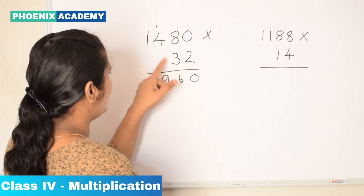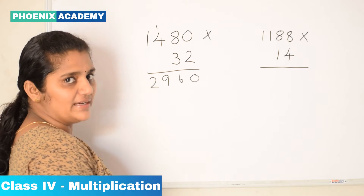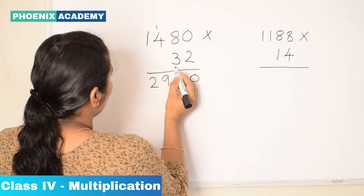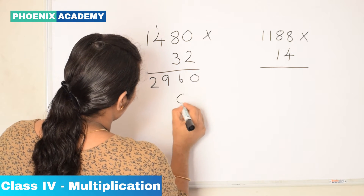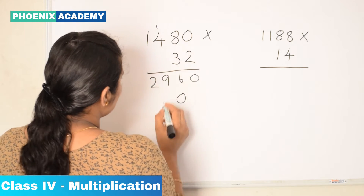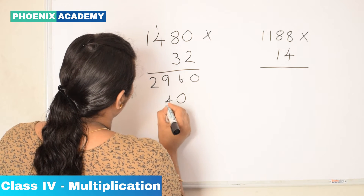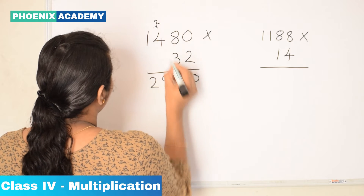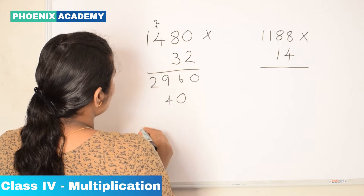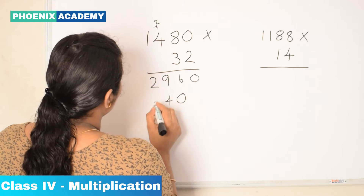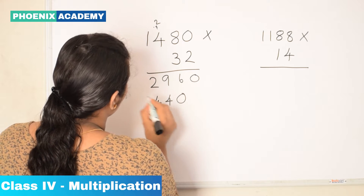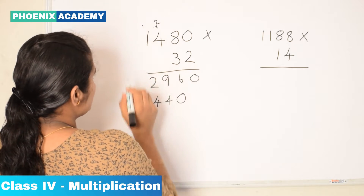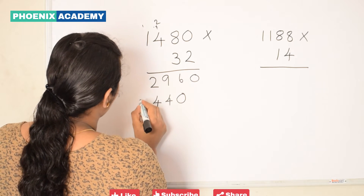Then we multiply 3, the digit in the 10's place, and write the partial product. 3 times 0 is 0. 3 times 8 is 24 — write 4, carry forward 2. 3 times 4 is 12, plus 2 is 14 — write 4, carry forward 1. 3 times 1 is 3, plus 1 is 4.